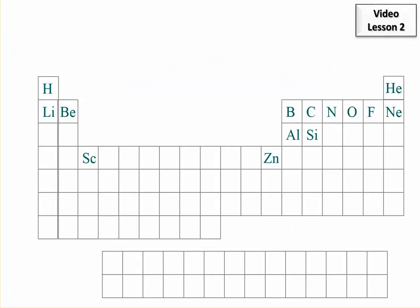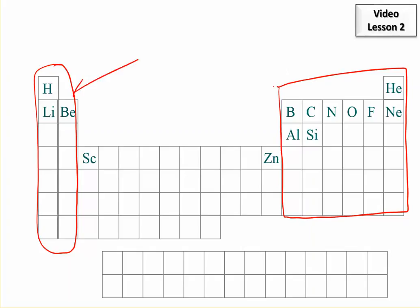Next, we have some main sections. These first two columns and this block here, together, those are called the main group elements.